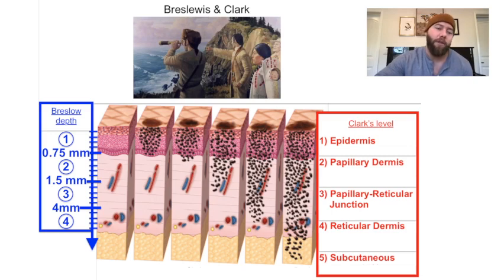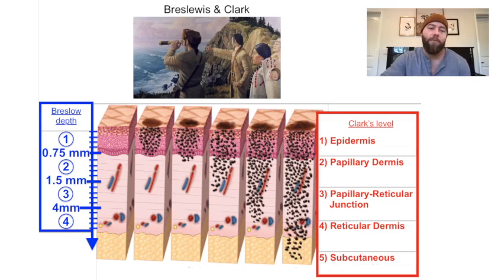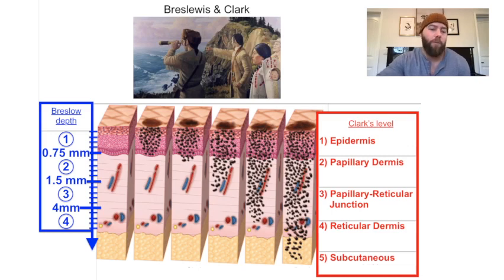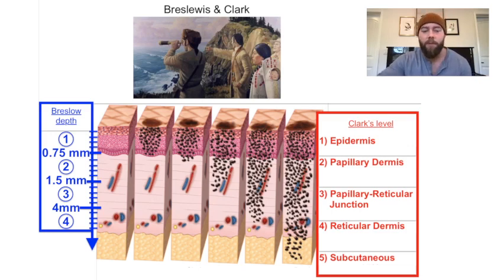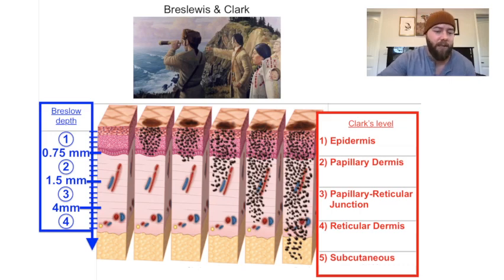Then you just know that 1, 2, 3, and 4 fall between each of those numbers. So Breslow depth level 1 is less than 0.75 millimeters. Level 2 is between 0.75 and 1.5 millimeters. Level 3 is between 1.5 and 4 millimeters.